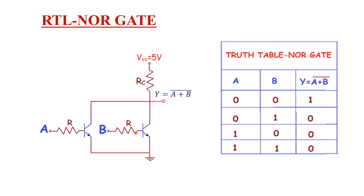Next, we are going to see the RTL NOR gate and how it is formed. By the combination of two transistors and two resistors, we form the RTL NOR gate. The logical equation is Y is equal to A plus B, the whole bar — that is the inverted OR gate.